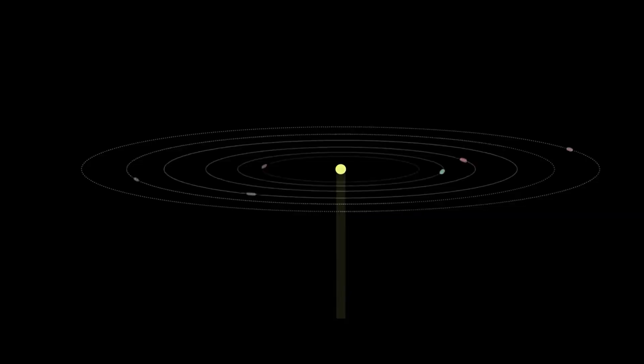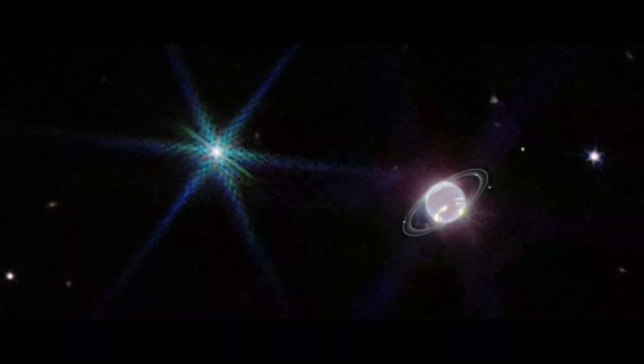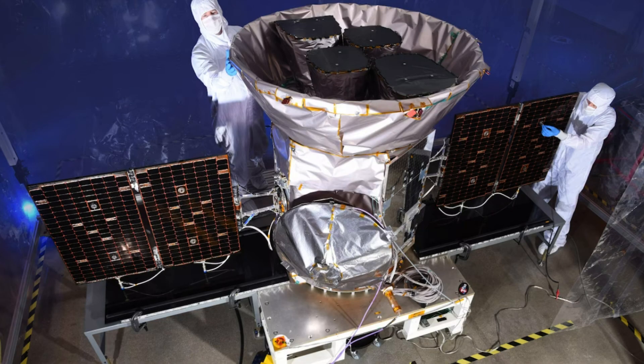Small, rocky worlds like ours, orbiting at a comfortable distance from an old, calm star like our Sun, are hard to find. They are less likely to transit the face of the star as seen from Earth, and they have minimal gravitational effects on the star's motion.